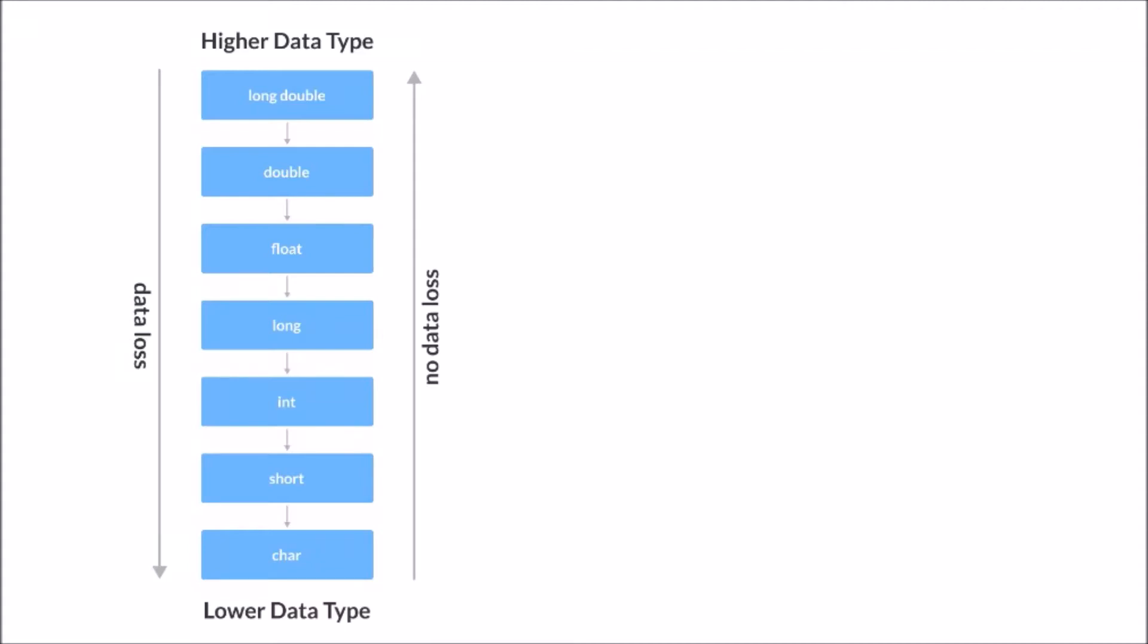Okay everyone, so now we are going further in the type conversion. We have discussed that there are some higher data types and there are lower data types. So what are these higher and lower data types? There is a hierarchy of data type. First of all, we are having on the top the long double, then further we are having double.